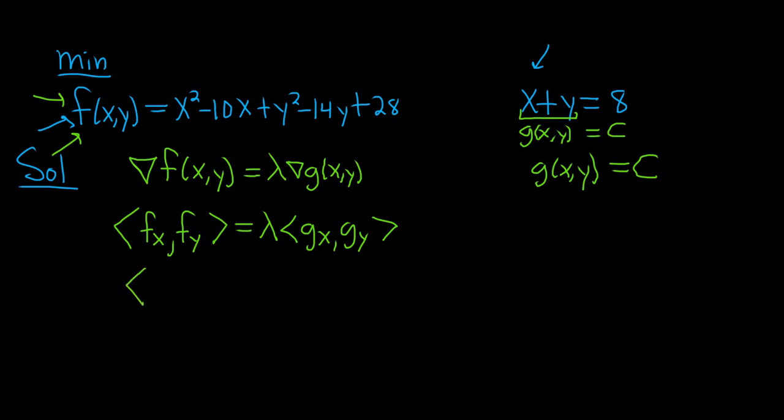f_x: when we take the partial with respect to x, everything is constant except x. So the derivative of x² is 2x, and the derivative of -10x is -10. Everything else is 0. When we compute the partial derivative of f with respect to y, all the x's go away. The derivative of y² is 2y, and the derivative of -14y is -14.